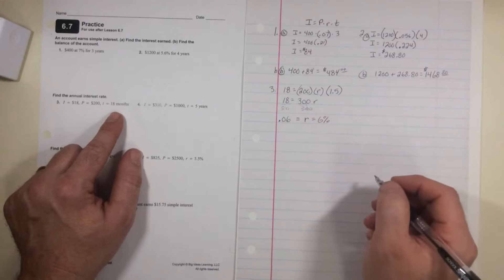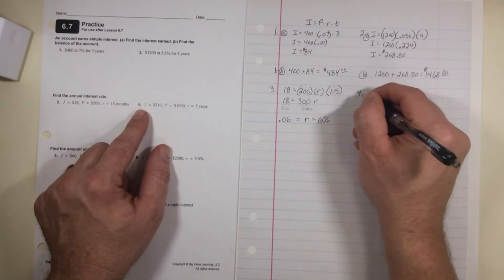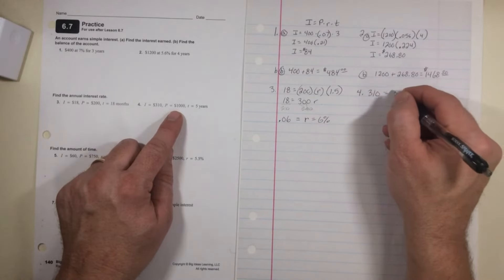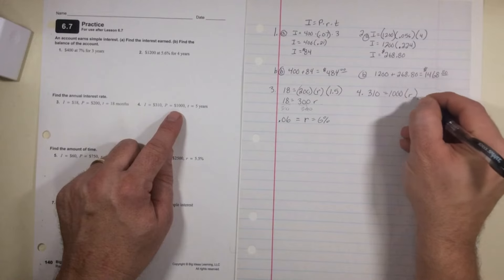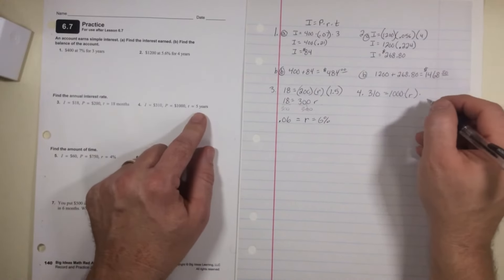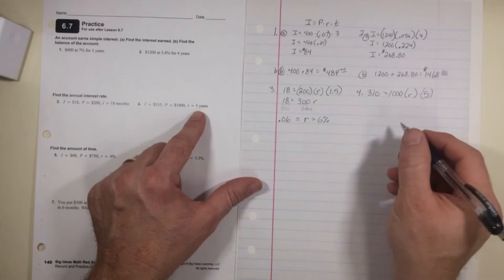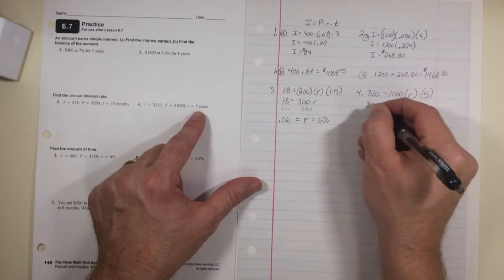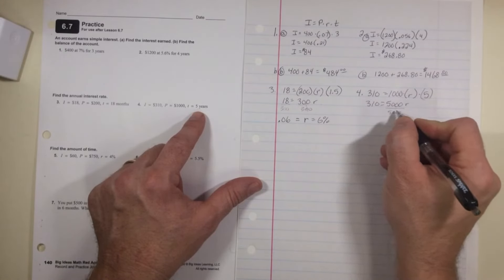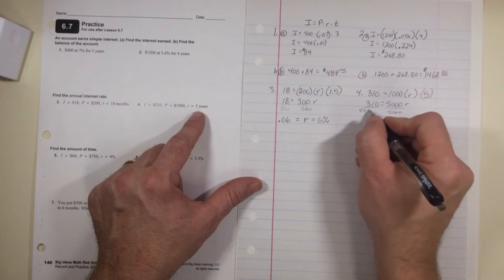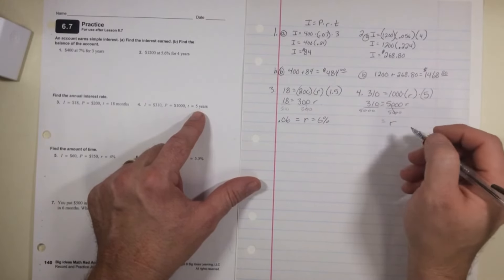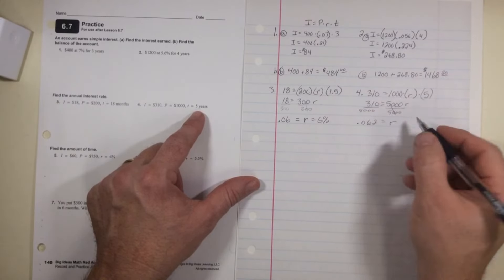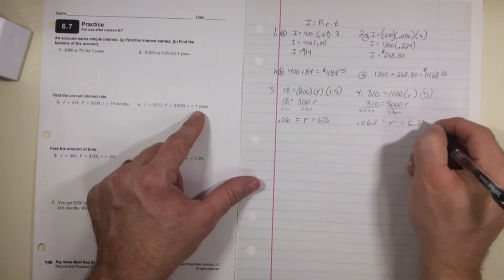Number four, they give me the interest of $310, which equals $1,000, which is the principal, times the rate times the time, 5 in this case. Well, 5 times $1,000 is $5,000R over here. $310, divide both sides by $5,000, and R equals in this case 0.062. Moving the decimal two places would equal 6.2%.